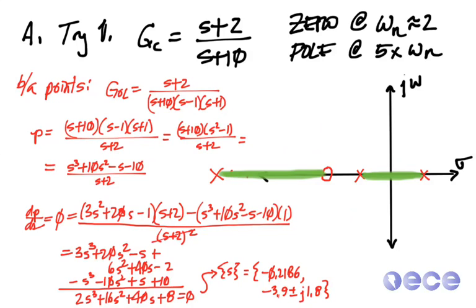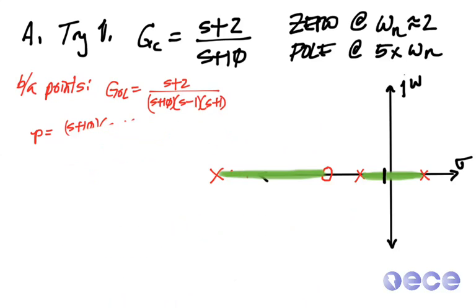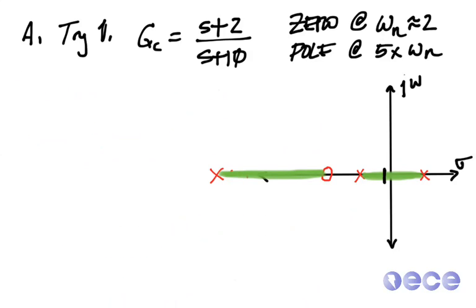Okay, so let's go ahead and label where this is on the root locus. Only minus 0.2186 makes sense as a breakaway point. So we've calculated that.